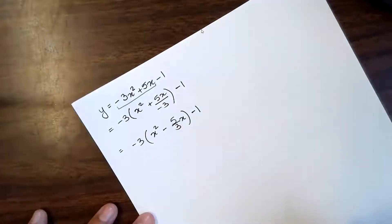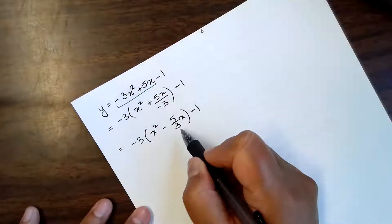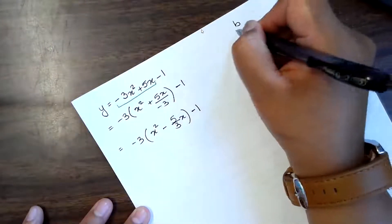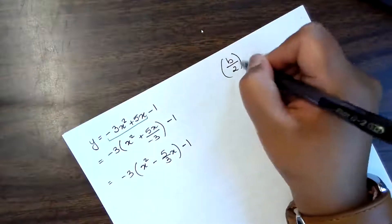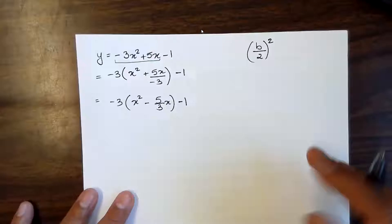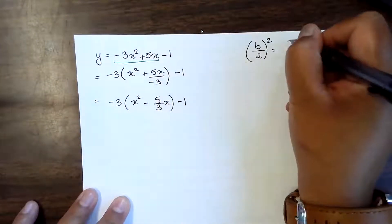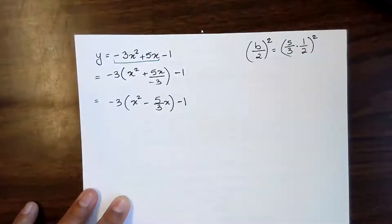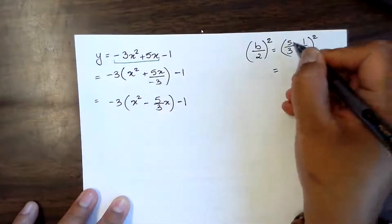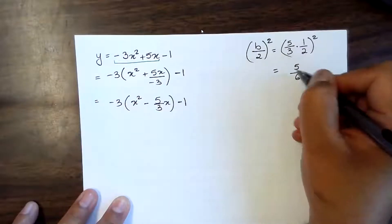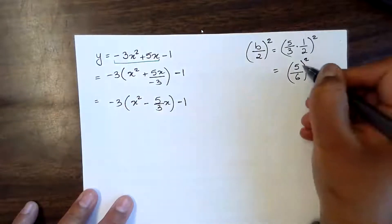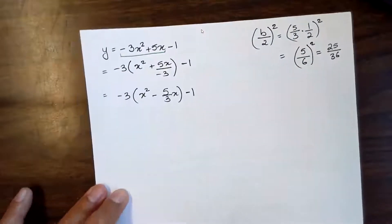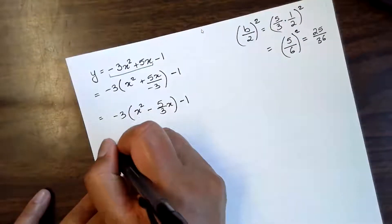Now we need to complete the square. We have our a term and our B term. To complete the square, we take B divided by 2 and square the whole thing. So that's (5/3) times (1/2), which gives us 5/6, and squaring that: 5 squared is 25 and 6 squared is 36. So we will add 25 over 36 to complete the square.